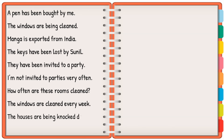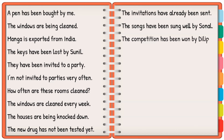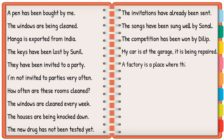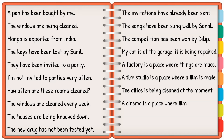'The houses are being knocked down.' 'The new drug has not been tested yet.' 'The invitations have already been sent.' 'The songs have been sung well by Sunil.' 'The competition has been won by Dilip.' 'My car is at the garage — it is being repaired.' 'A factory is a place where things are made.' 'A film studio is a place where a film is made.' 'The office is being cleaned at the moment.' 'A cinema is a place where films are shown.'